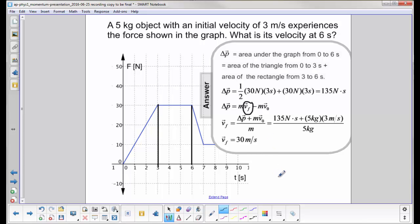Hopefully at this point in your physics career you can kind of do that in your head and just write the answer down. So you get v final is 135 newtons per second plus 5 kilograms times 3 meters per second divided by 5 kilograms. And we get a v final of 30 meters per second.